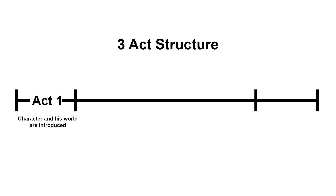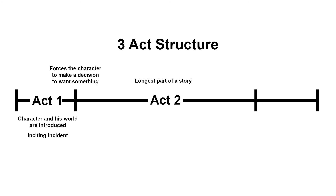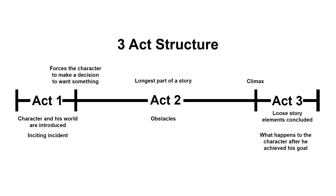To review: act one is when the character and his world are introduced. Then something happens to that character — called the inciting incident — that forces the character to make a decision to want something. Act two is usually the longest part of a story and it is about all the obstacles the character faces until he achieves what he wants, called the climax. Act three is after the climax when all the loose story elements are concluded and it is revealed what happens to the character after he achieved his goal.